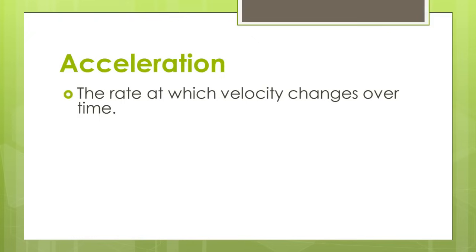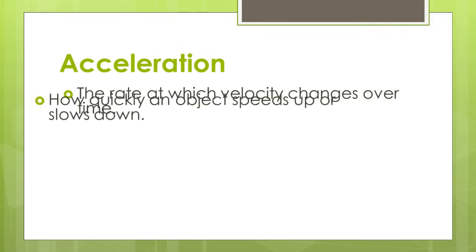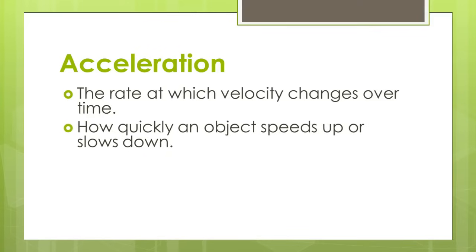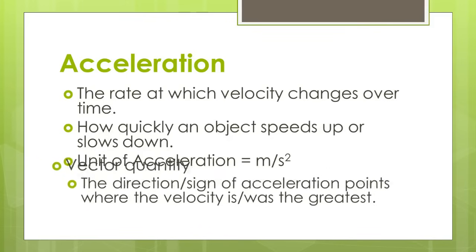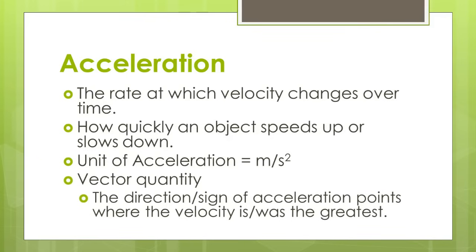Let's go back to our definition of acceleration. It's the rate at which velocity changes over time. We no longer are dealing with a constant velocity where velocity stays exactly the same. As time increases, velocity increases or decreases — we're really looking at how quickly an object speeds up or slows down. The unit of acceleration is meters per second squared, derived from velocity (meters per second) over time (seconds). Acceleration, just like displacement and velocity, is a vector quantity. The direction or sign of the acceleration points where the velocity is or was the greatest, and the overall sign has to do with both the direction of acceleration and the direction of the object.